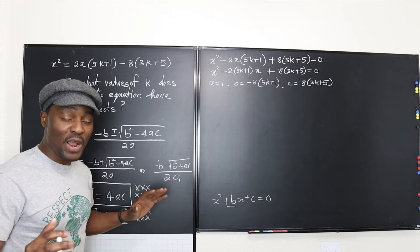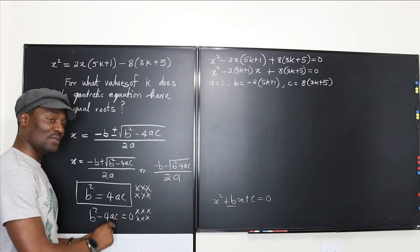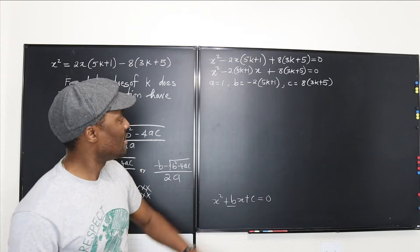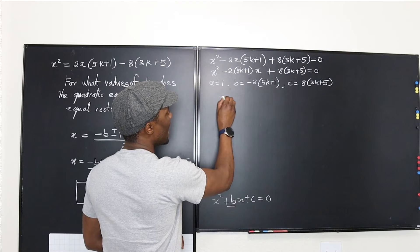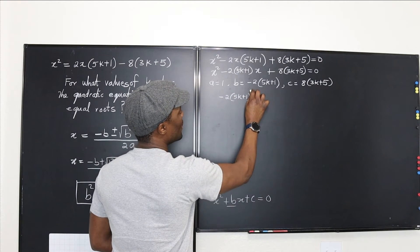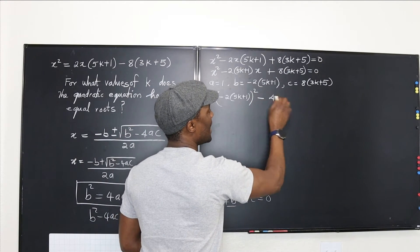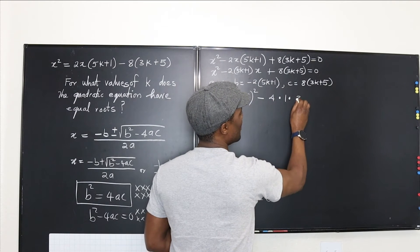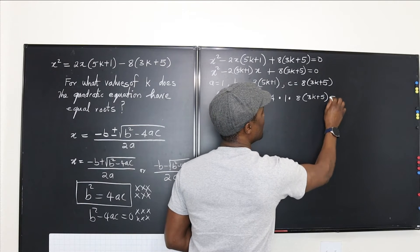The only condition where we'll have equal roots is if b squared minus 4ac equals zero. So let's substitute: b squared will be [−2(5k+1)]² minus 4 times a, where a is 1, times c, which is 8(3k+5), all equal to zero.